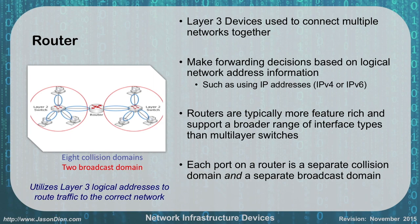On this slide, you have eight collision domains. The reason is the four ports of each switch each have their own collision domain — those blue circles. The router only has two ports, and each one shares a collision domain with its connected switch. So counting them: one, two, three, four, five, six, seven, eight. The broadcast domains — the red circles — each one is by itself because the router breaks them apart.